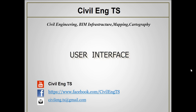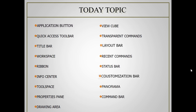In this video I will explain the user interface of Civil 3D in detail. The topics for today include: application button, quick access toolbar, title bar, workspace, ribbon, info center, tool space, properties panel, drawing area, view cube, transparent command, layout bar, recent command, status bar, customization bar, panorama, and command bar.